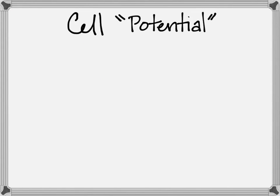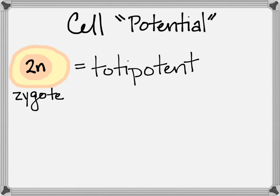We say that cells have different levels of potential. The zygote has the potential to become any cell and it can create an entirely new organism, so we call it totipotent.